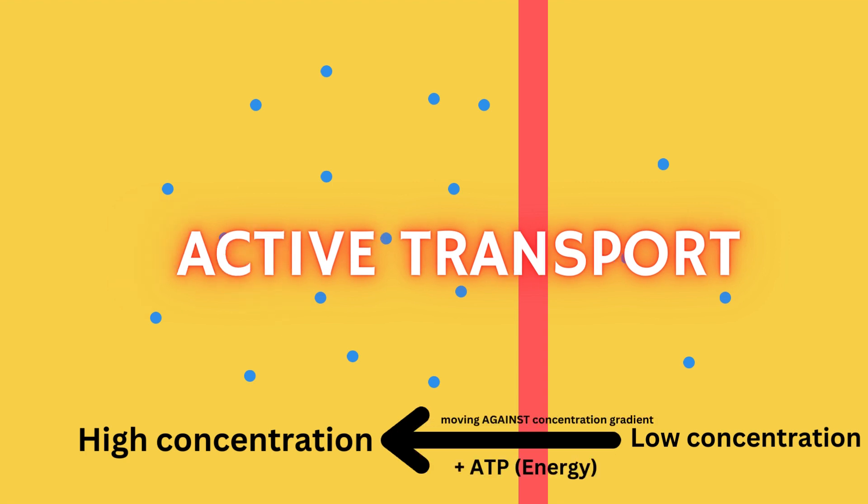Active transport, on the other hand, is the opposite of passive transport — when molecules move against their concentration gradient, this time from a low concentration to a high concentration. However, in order to do this, it is going to need some extra energy in the form of ATP, in which ATP allows for active transport to take place.